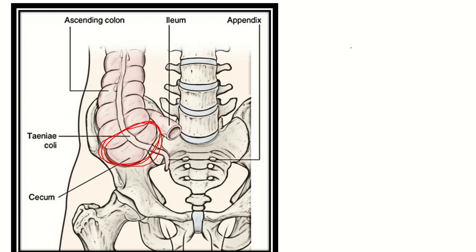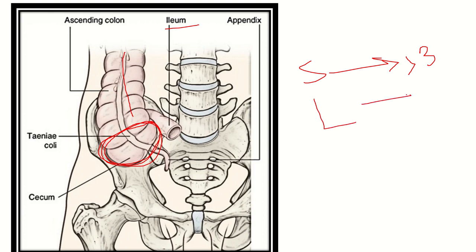The pathological diameters for different structures are as follows. For the ileum, that is the small intestine, more than three centimeters is pathological. For the ascending colon, which is part of the large intestine, more than six centimeters is pathological.